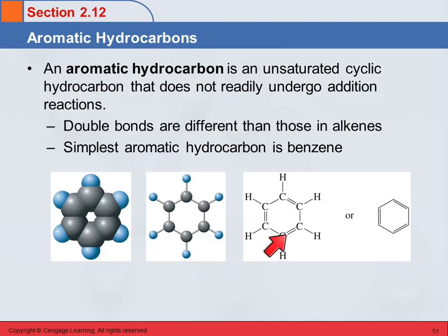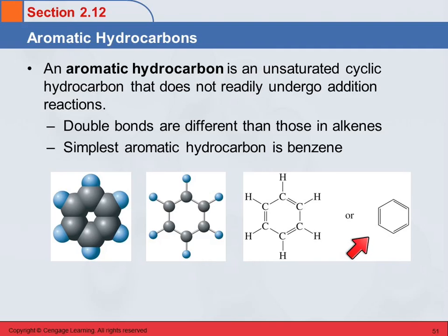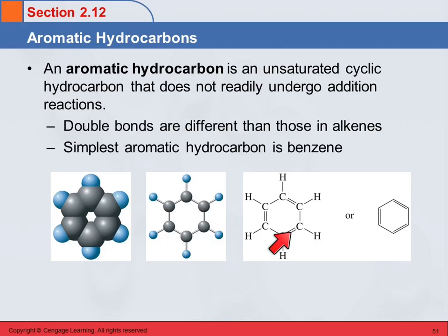So this is one way that we sometimes draw it, with alternating double and single bonds. In the line angle, it would look like this. Sometimes we draw it that way because it's convenient, but this doesn't actually represent what the structure looks like. Because if it truly had alternating double and single bonds, these double bonds would be reactive, and they are not. We've determined that experimentally.